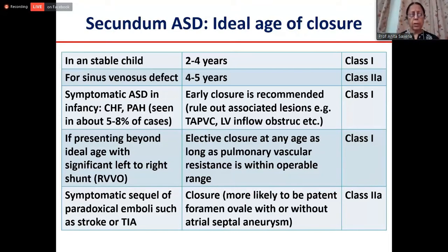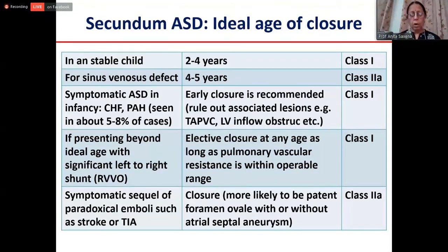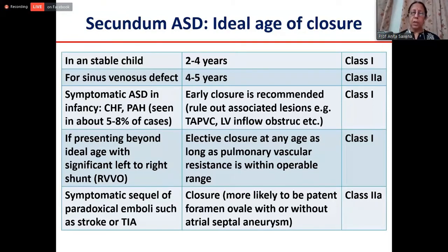All hemodynamically significant ASDs with RV volume overload should be closed, as long as pulmonary artery pressures are within normal limits or pulmonary vascular resistance is within the operable range. Very occasionally we close the foramen ovale in elderly or 40–45 year old persons who come with a history of transient ischemic attack or stroke of unknown origin, where a PFO is found to be shunting right-to-left — these are cases of cryptogenic stroke where you may want to close the patent foramen ovale.